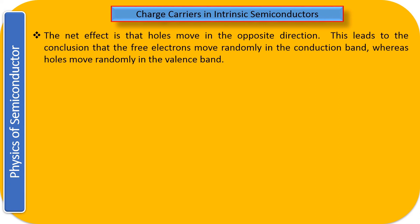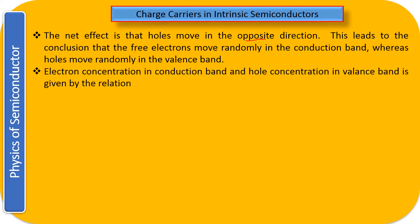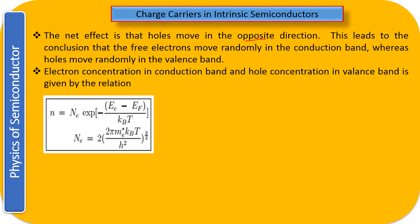The electron is going to the conduction band and also hopping within the valence band. When the electron hops within the valence band, it creates movement of the holes. Therefore, electrons and holes move in opposite directions in the valence band. The net effect is that holes move in the opposite direction of electrons. Free electrons move randomly in the conduction band whereas holes move randomly in the valence band.